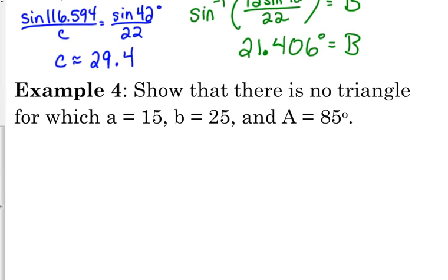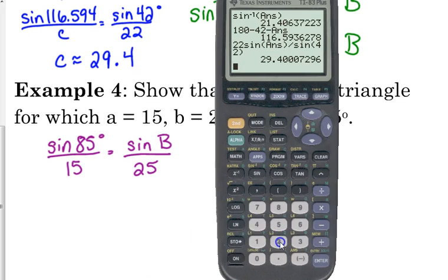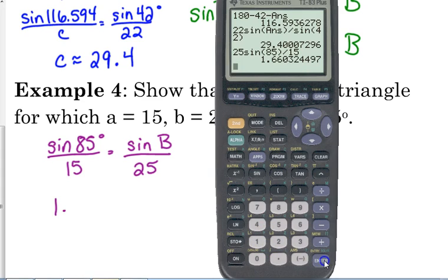So, here's the next example. Show that there is no triangle for which side A can be 15, side B can be 25, and angle A can be 85 degrees. So, we're going to set up a law of sines. Sine of 85 over 15 is equal to the sine of B over 25. So, 25 sine of 85 divided by 15 gives us 1.66 is approximately the sine of B.